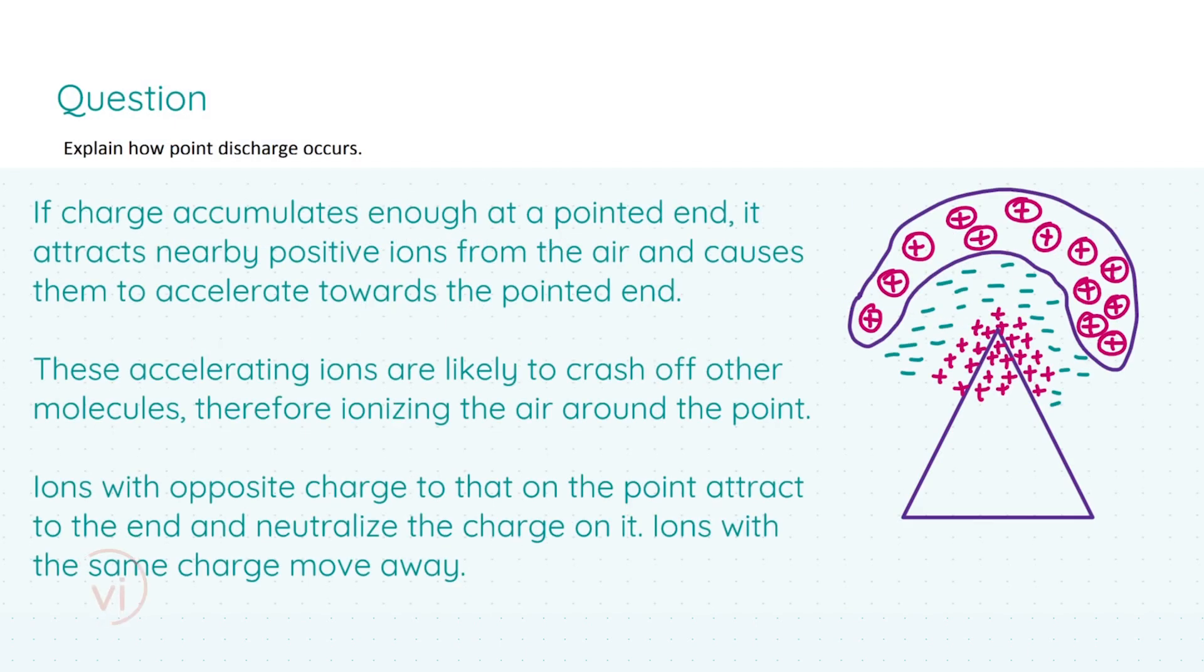In the next part of our question, we are asked to explain how point discharge occurs. I've included a diagram again—it's not explicitly asked for, but it does help to convey your point. How does it occur? Basically, if charge accumulates enough at a pointed end, it attracts nearby positive ions from the air and causes them to accelerate towards the pointed end. This statement will get your first three marks. Your next three marks will be for saying that these accelerating ions are likely to crash off other molecules, therefore ionizing the air around the point.